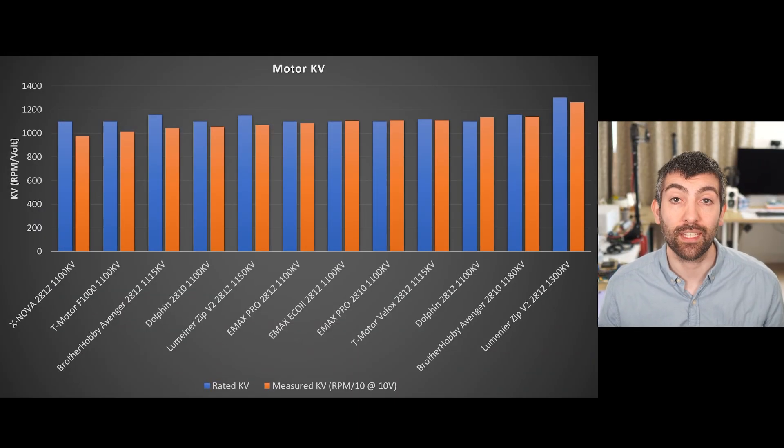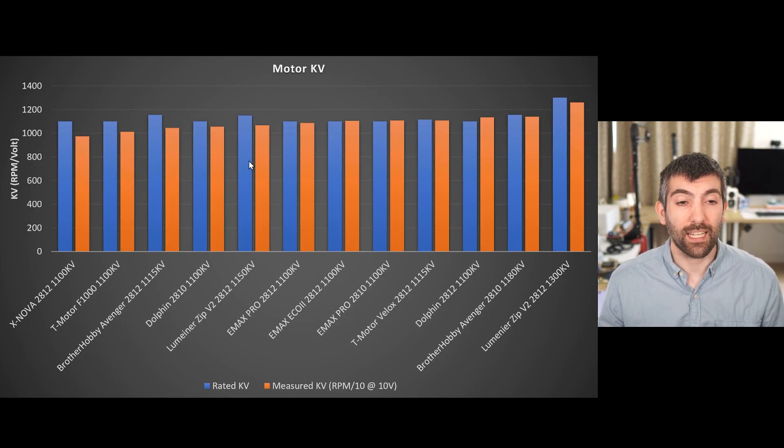Let's start by looking at the results of the kV test. We have the measured kV in orange in RPM per volt and the rated kV in blue. We've ordered the motors from lowest measured kV up to highest measured kV, and as we would expect, the Lumineer Zip V2 1300 kV comes out with the highest kV. But it's quite interesting down the bottom end of the chart that we have a number of motors that are measuring much lower than their ratings. The Xnova 2812 rated at 1100 kV is measuring out at less than 1000 kV, and the T-Motor F1000 1100 kV is measuring out just around 1000 kV. That's a big discrepancy, about 10% or so.